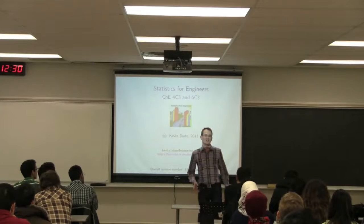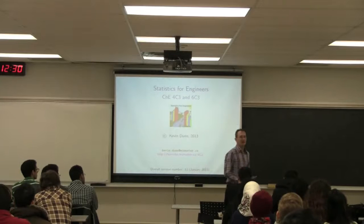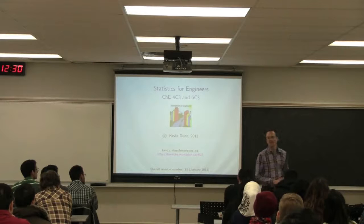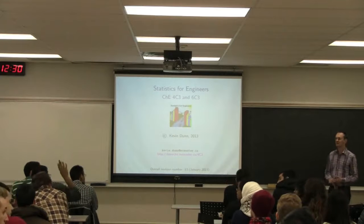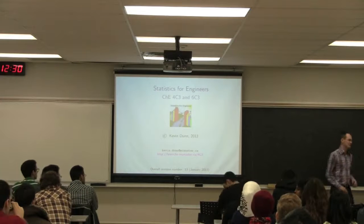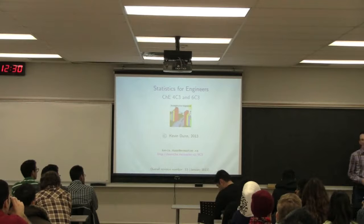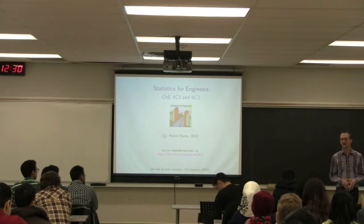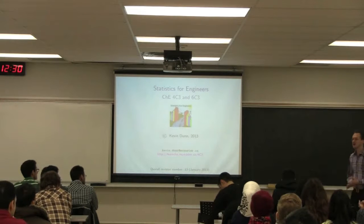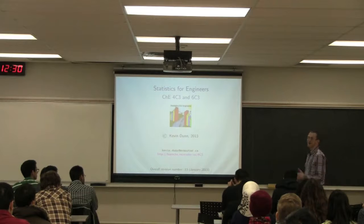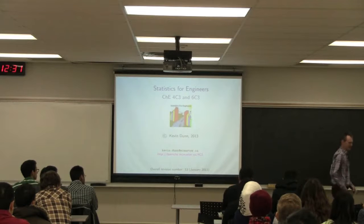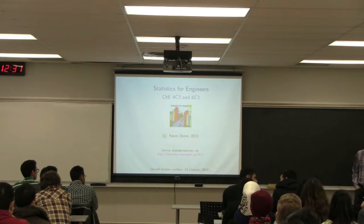Welcome to 4C363. How many of you here are 600-level students? I just didn't get a class list yet for 600-level students. So we've got a class of 100 people, 90 plus 10. It's surprising that it's a bigger class than the mandatory course. I'm not sure how an elective can have more people than a mandatory course.